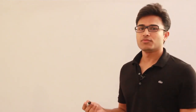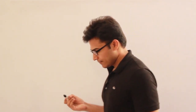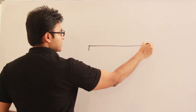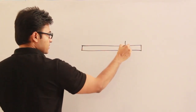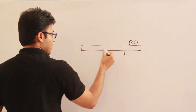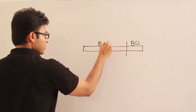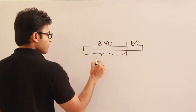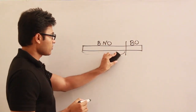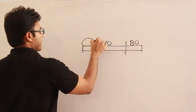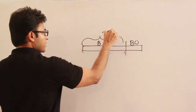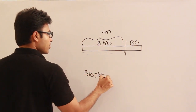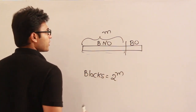In direct mapping, if you observe how the physical address is divided, we see that the physical address is divided into two parts: one is the block offset and the other is the block number. Now, let us say this block number consists of m bits. Then the number of blocks equals 2 power m.